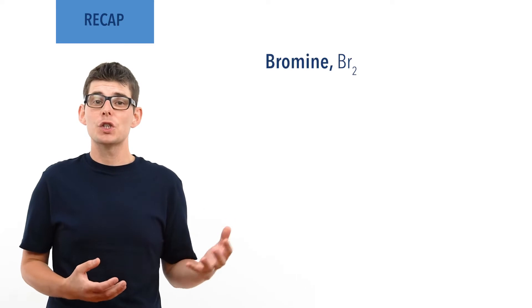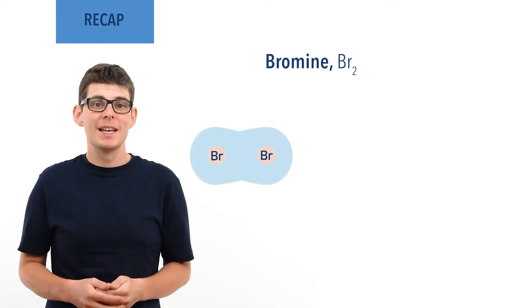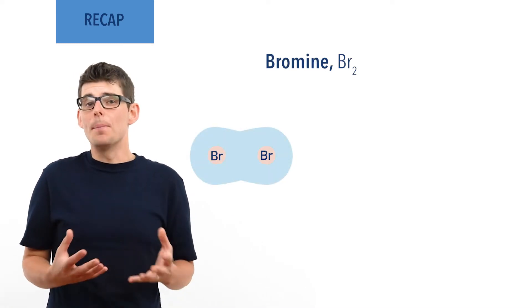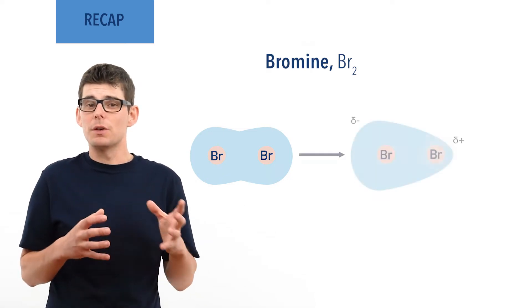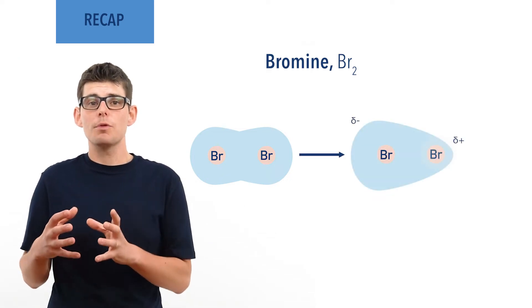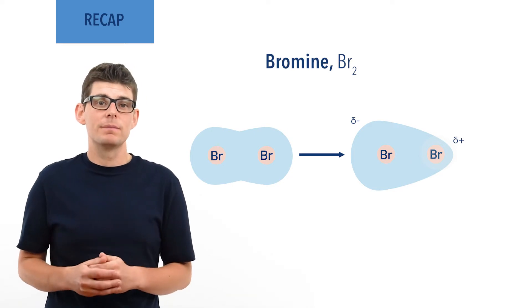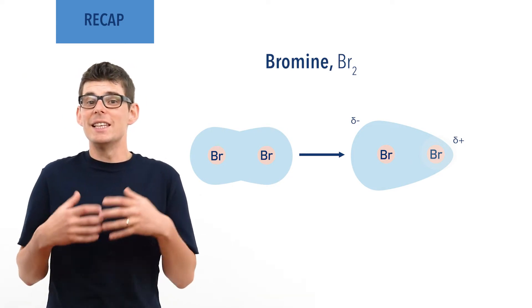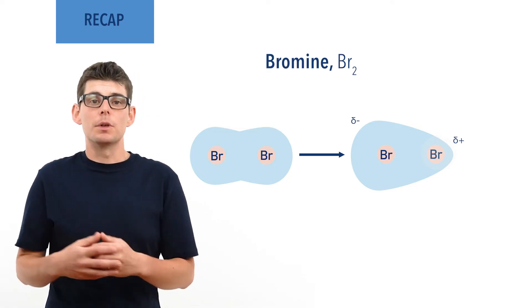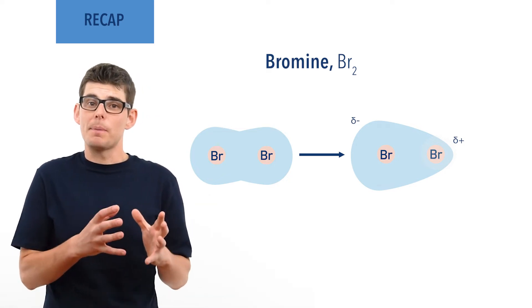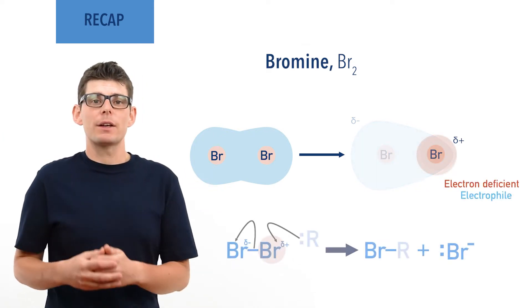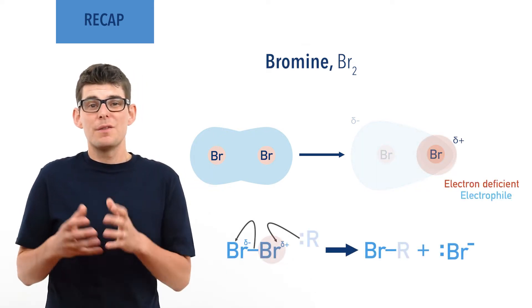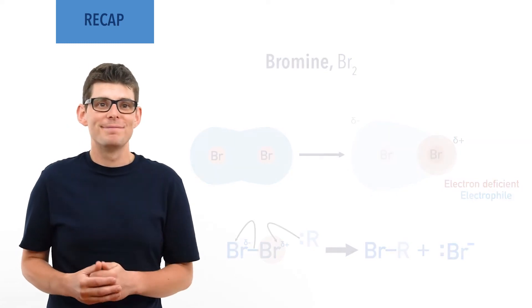Bromine is found in the form of Br2, a diatomic molecule. To act as an electrophile, a bromine molecule has to be polarized, forcing electrons in the covalent bond to move towards one bromine atom more than the other. A highly polarized bromine-bromine bond is weakened and easily broken, enabling the bromine atom with a partial positive charge to act as an electrophile and accept a pair of electrons from something else, forcing the bromine-bromine bond to break at the same time. Recap done — let's go.